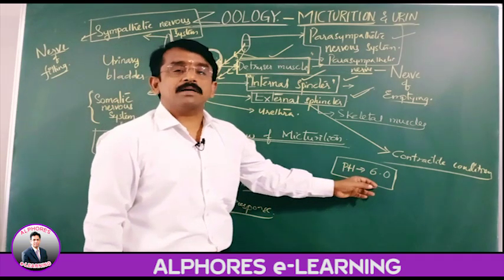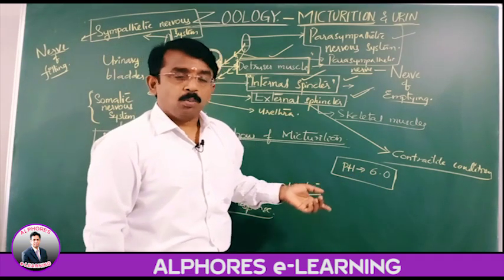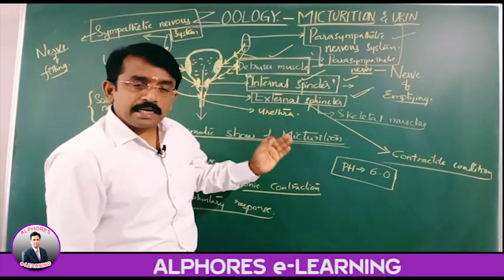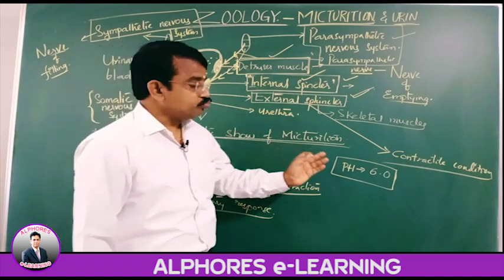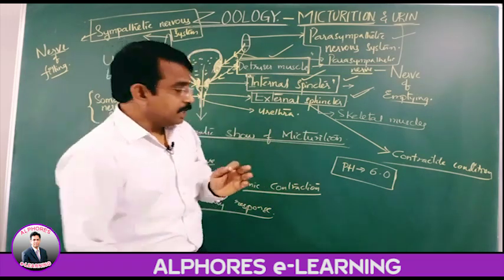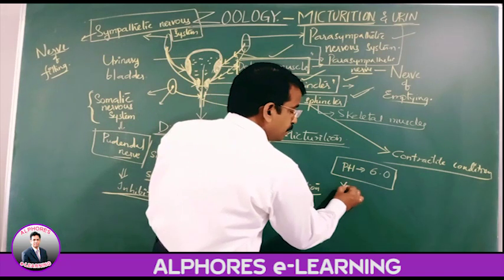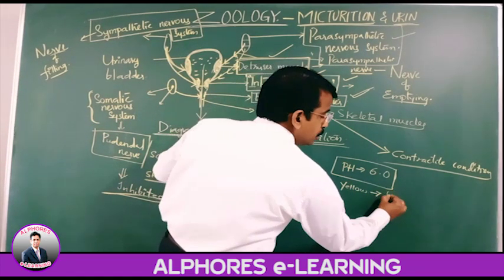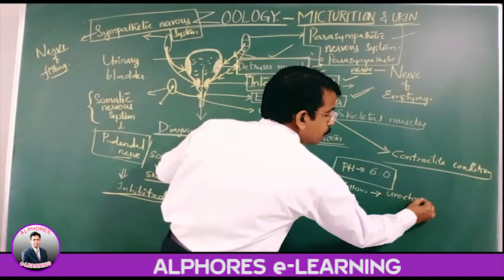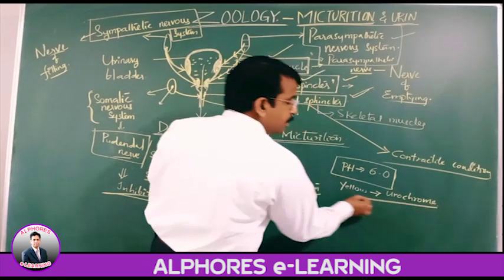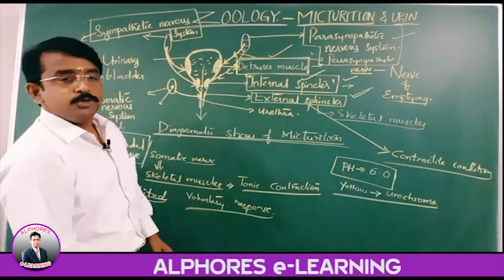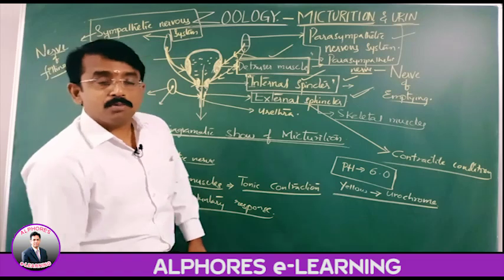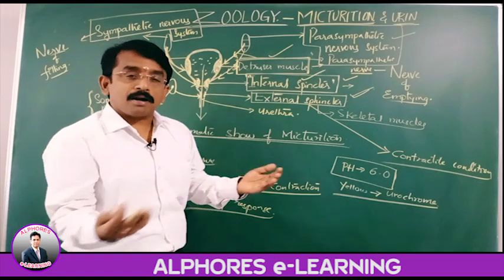pH 6 is less than 7, which is slightly acidic. The yellow color of urine is because of urochrome. Urochrome is a breakdown product of the hemoglobin of worn-out RBCs.